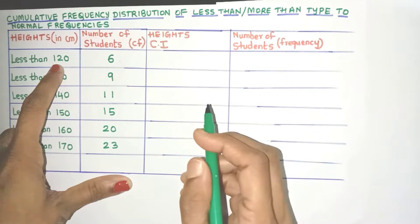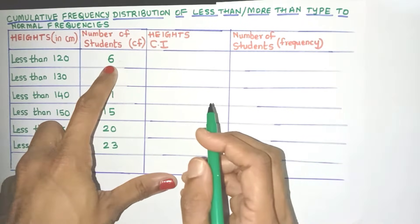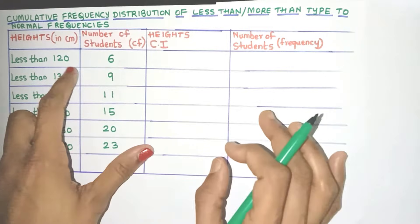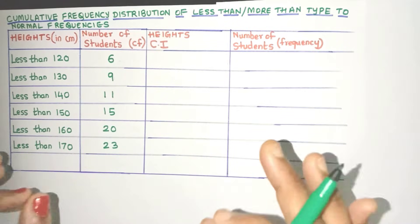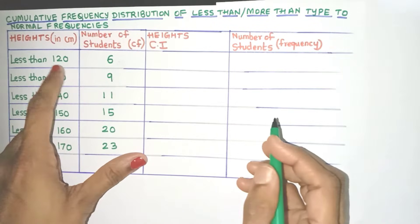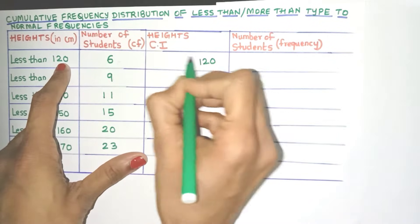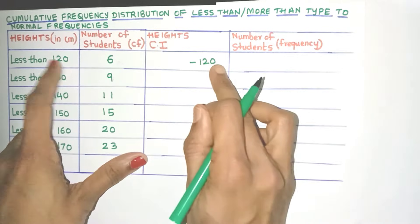Now here in the first row, it is given less than 120, there are 6 students. That means the maximum height of these 6 students will be within 120. So can we say that the upper class limit will be 120? Yes. So for this class interval, the upper limit will be 120.